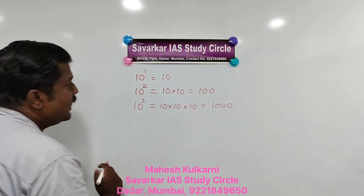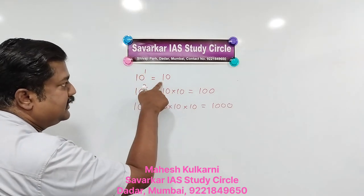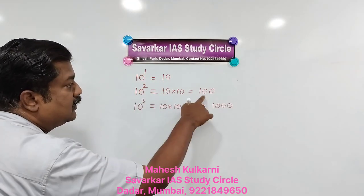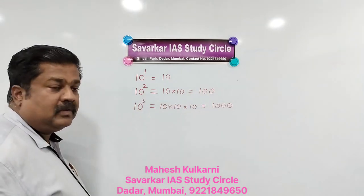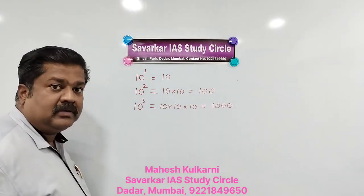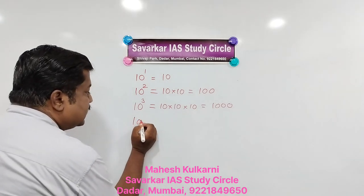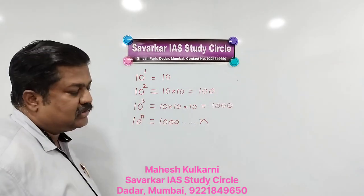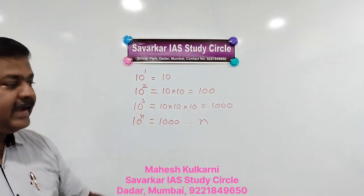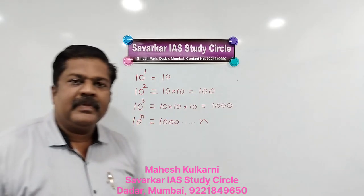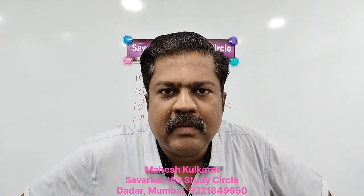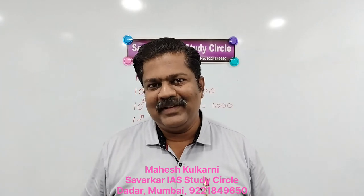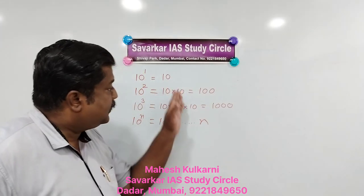Now check it out another way. 10 raised to 1: there is one zero after 1. 10 raised to 2: two zeros after 1. 10 raised to 3: three zeros after 1. So like that I can find any power. For example, 10 raised to 10 — you can blindly say: it is 1 followed by ten zeros. So this is the first part you have to understand thoroughly.